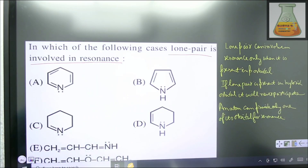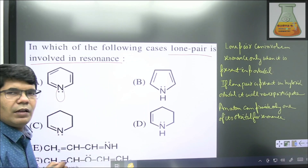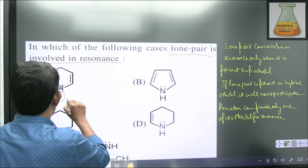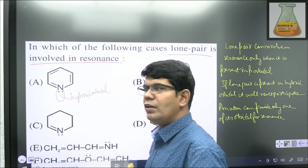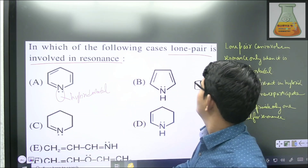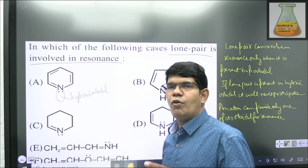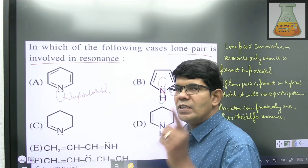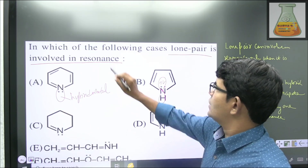In the first case, the nitrogen atom has already given its p orbital to form a pi bond, so the lone pair is present in a hybrid orbital — it will not participate in resonance. In the second case, this nitrogen atom is not involved in any pi bond formation, so its lone pair is present in a p orbital and can happily involve in resonance through lone pair–pi conjugation.